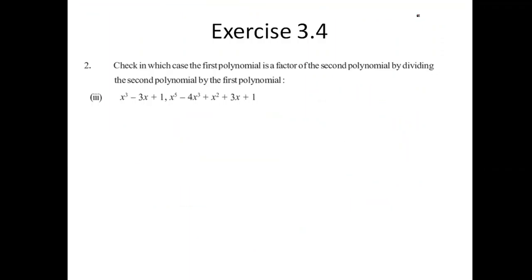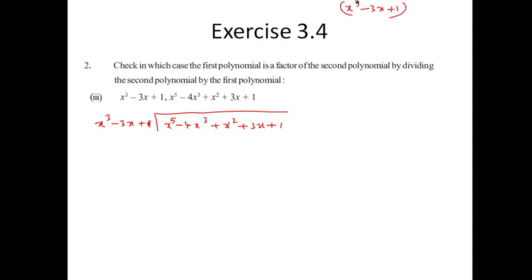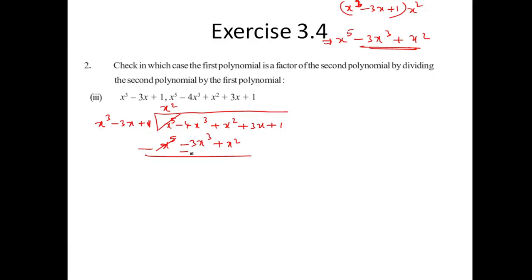Third sub-example. The divisor is x³ minus 3x plus 1, and the dividend is x⁵ minus 4x³ plus x² plus x. I multiply by x² to get x⁵ minus 3x³ plus x². Subtracting, the x⁵ cancels, I'm left with minus 3x and the rest stays. The remaining X³ term is left, plus 3x plus 1.